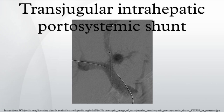Transjugular Intrahepatic Portosystemic Shunt, or TIPS, is an artificial channel within the liver that establishes communication between the inflow portal vein and the outflow hepatic vein. It is used to treat portal hypertension, which frequently leads to intestinal bleeding, life-threatening esophageal bleeding, and the buildup of fluid within the abdomen. An interventional radiologist creates the shunt using an image-guided endovascular approach, with the jugular vein as the usual entry site.